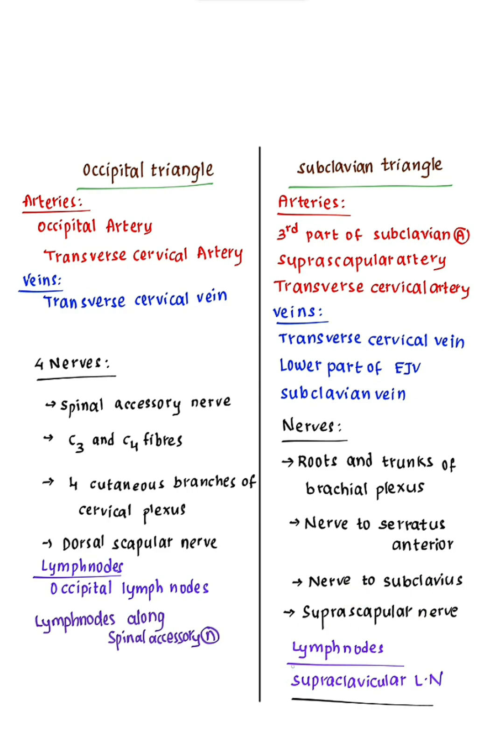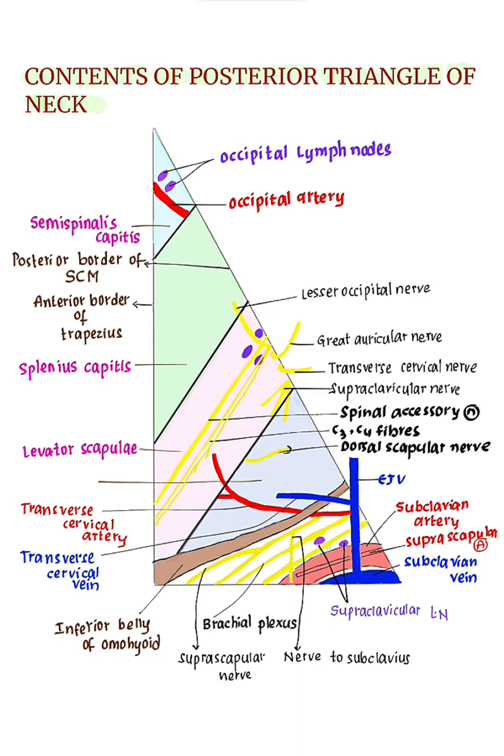Summary of nerves in the subclavian triangle: roots and trunks of the brachial plexus, nerve to serratus anterior (long thoracic nerve), nerve to subclavius, and suprascapular nerve. Lymph nodes: supraclavicular lymph nodes.